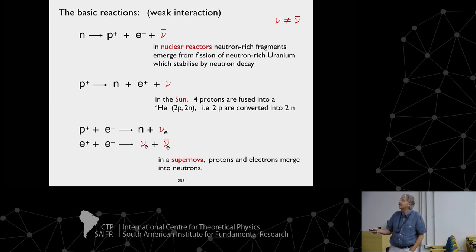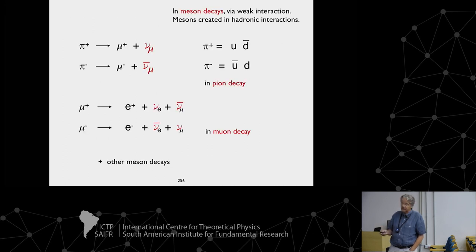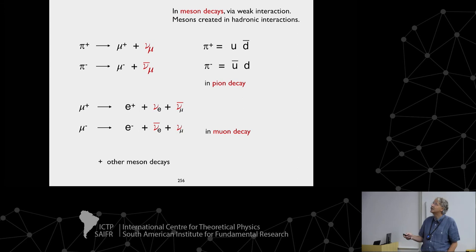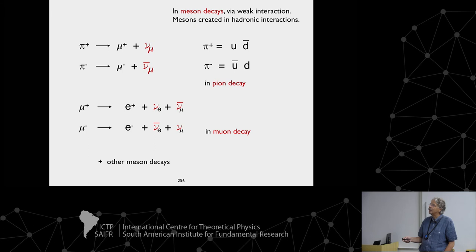Other processes that produce neutrinos are weak-interaction decays of mesons, themselves created by hadronic interactions. Pions are prominent examples: π+ decays into a muon plus a muon neutrino, and π− into a muon minus plus a muon antineutrino. Muon decays are leptonic — a lepton into a lepton — and require two neutrinos: an electron neutrino to accompany the electron, and a muon neutrino to accompany the muon.